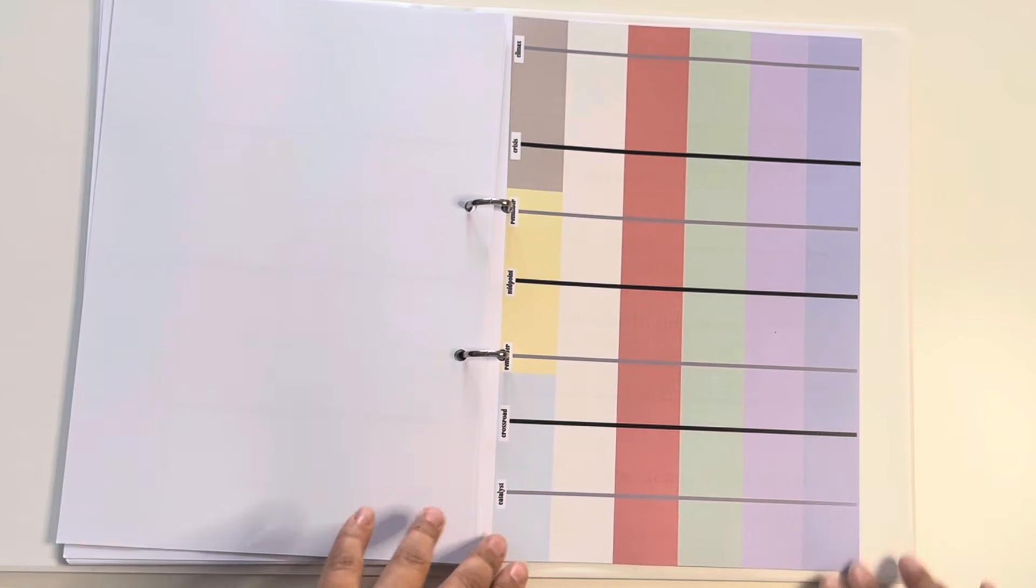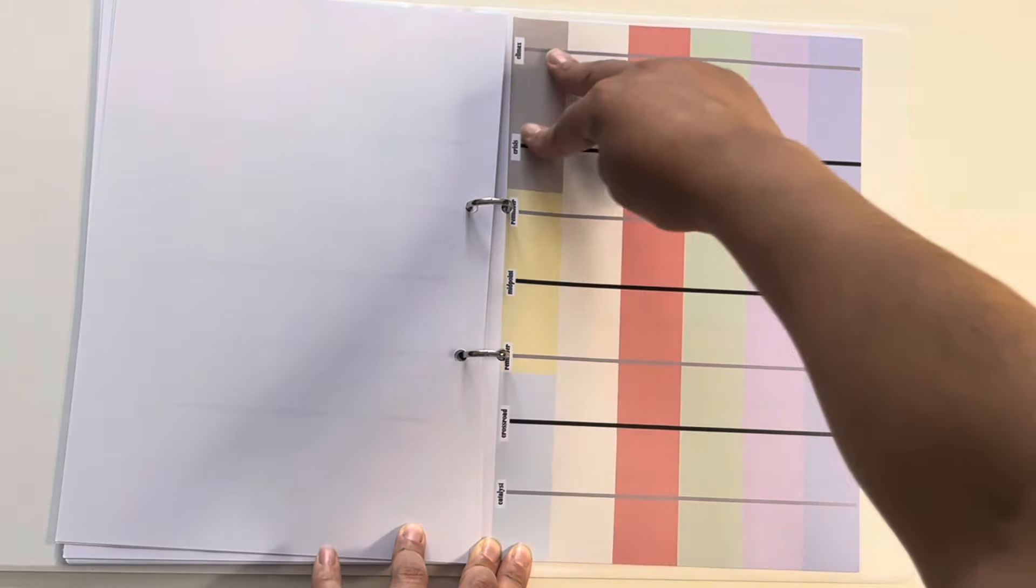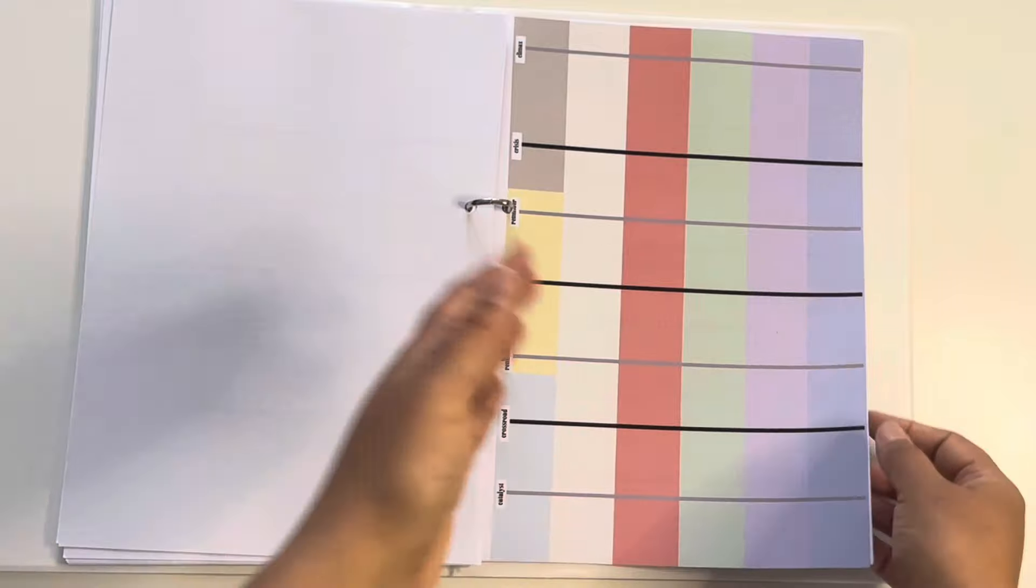And then we have exactly the same here, except this is me charting my character arcs for all of my characters. This is Project Grey specific. So we've got one, two, three, four, five characters, and where their character arc is throughout the entirety of the three novels. Book one, book two, and book three. Again, specific.